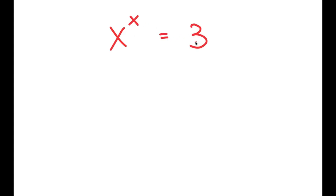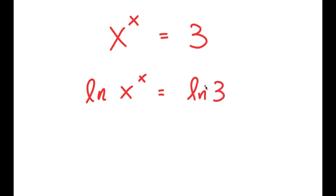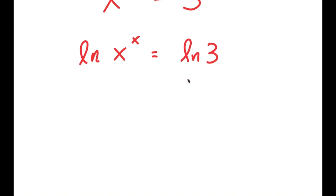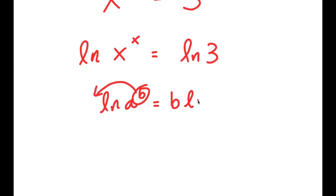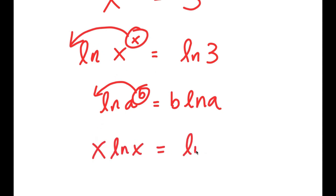In this video, I'm going to solve the equation x to the power of x is equal to 3. To solve this, I'm going to first start by taking the natural log on both sides. So I get ln of x to the power of x is equal to ln of 3. An important property of logarithms is that ln of a to the power of b equals b times ln a. So I can move x to the front, giving me x times ln x is equal to ln 3.